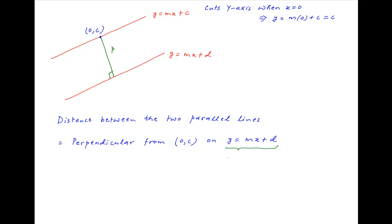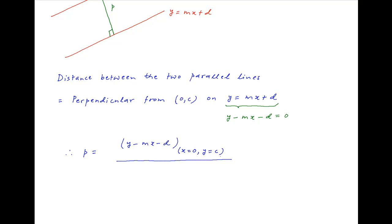The equation of the second line can be expressed as y minus mx minus d is equal to 0. Therefore, the perpendicular distance p is equal to the value of y minus mx minus d when x is equal to 0 and y is equal to c, divided by the square root of the sum of the squares of the coefficients of x and y in the equation of the second line.